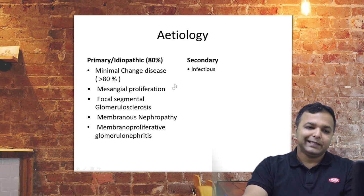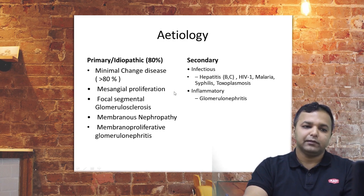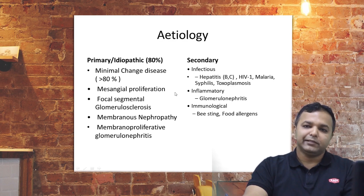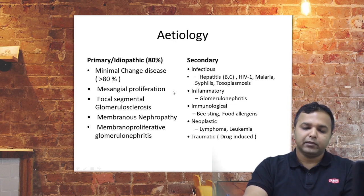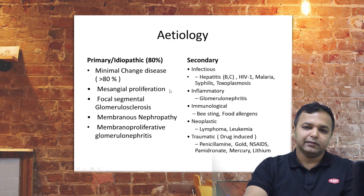Secondary causes may include infectious causes like Hepatitis B, C, malaria, toxoplasma; inflammatory causes like glomerulonephritis; immunological causes like bee stings or food allergens; neoplastic causes like lymphoma and leukemia; and drug-related causes such as penicillamine, gold, mercury, or lithium — all of which can produce secondary nephrotic syndrome.